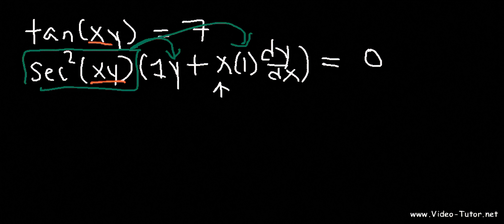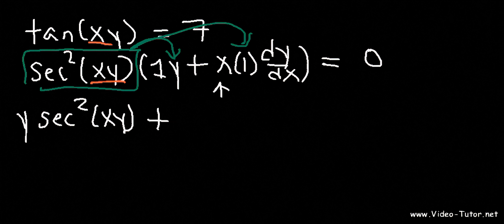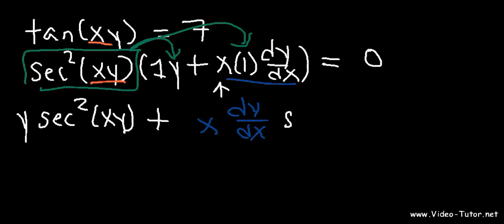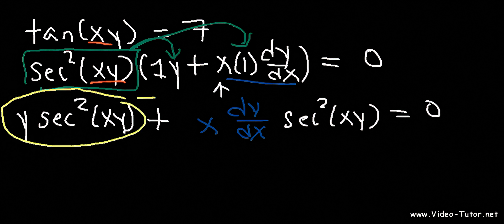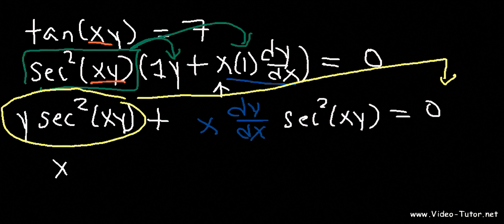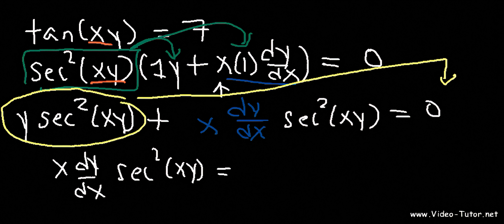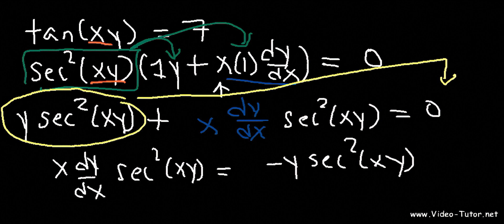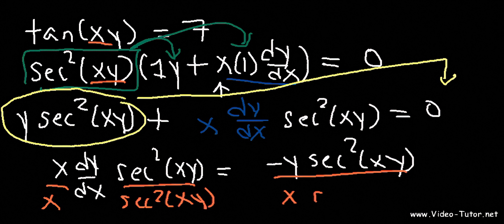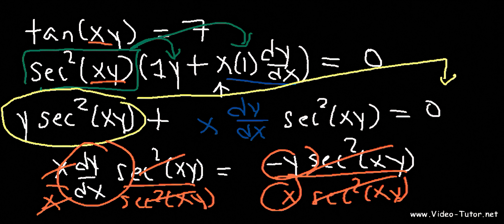So secant squared times y is y secant squared xy. And for the next term, x dy/dx times secant squared xy. Now we take the term without dy/dx and move it to the other side: x dy/dx secant squared xy equals negative y secant squared xy. Dividing both sides by x secant squared, the secant squared cancels, and dy/dx equals negative y over x.